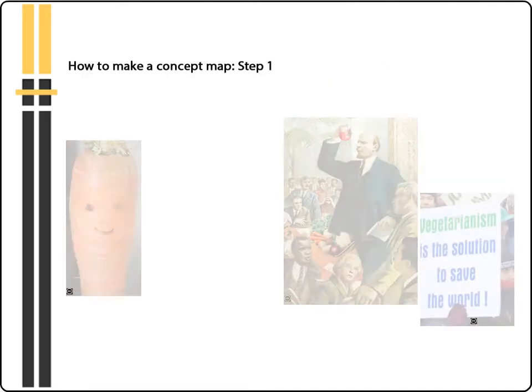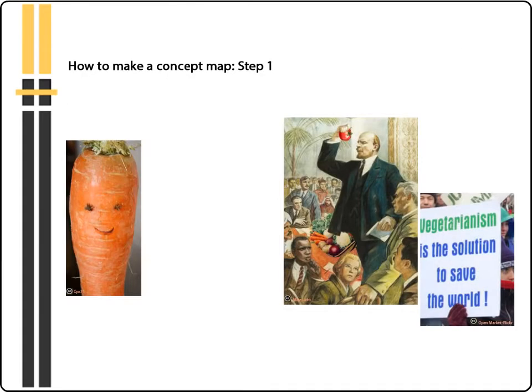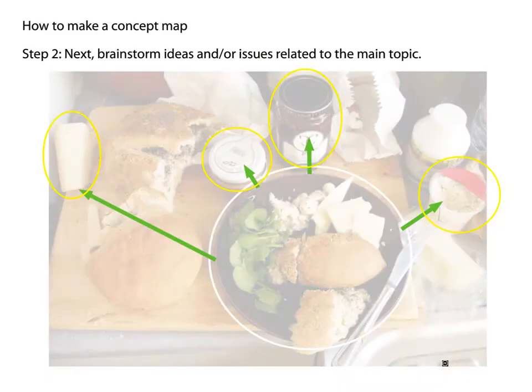In our example we will use the topic of vegetarianism to illustrate how to create a concept map. I'll begin by writing it down and then drawing a circle around it to illustrate that this is the main topic.